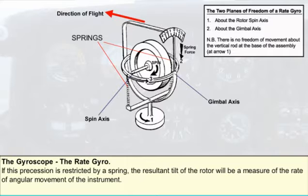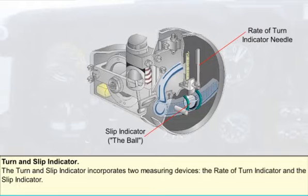as shown in this diagram, the resultant tilt of the rotor will be a measure of the rate of angular movement of the instrument. This instrument incorporates two measuring devices, both indicating on the same instrument face.